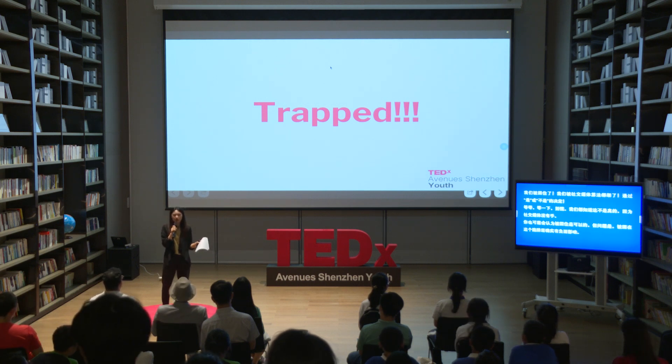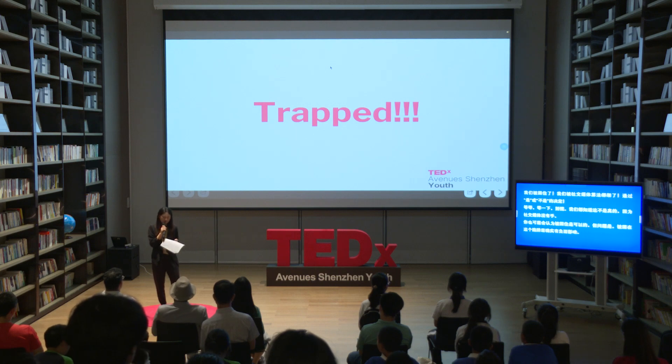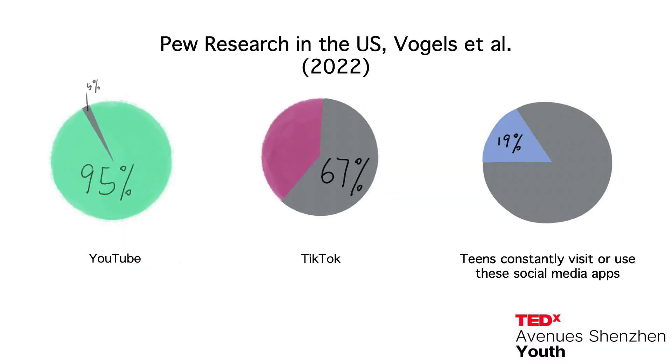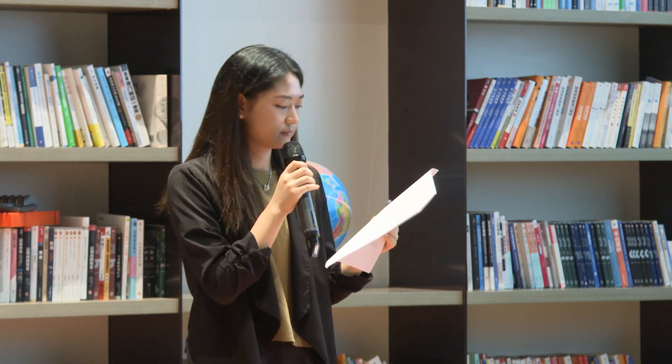Wait — hold on a second. Don't panic. We all know this is not literally true because social media doesn't have hands. And you might think it's okay to be trapped. But being trapped does have a negative impact. According to a survey done by Pew Research in the U.S. in 2022, YouTube dominated teens' online landscape with 95% of teens using it, followed by TikTok with 67%. Disturbingly, up to 19% of teens reported constantly visiting or using social media apps.